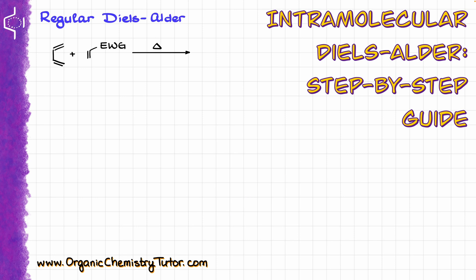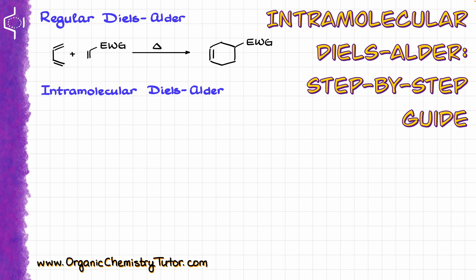When it comes to regular Diels-Alder reactions, like the one that I have on the screen, typically we are not going to have any problems predicting the product, and the product is going to look something like that. When it comes to the intramolecular versions of this reaction, things can be a little bit trickier.